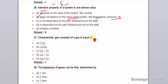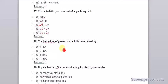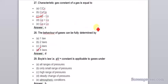The characteristic gas constant of a gas is equal to Cp minus Cv. The behavior of gases can be fully determined by four laws. There are three laws which I already told and fourth is general gas law.